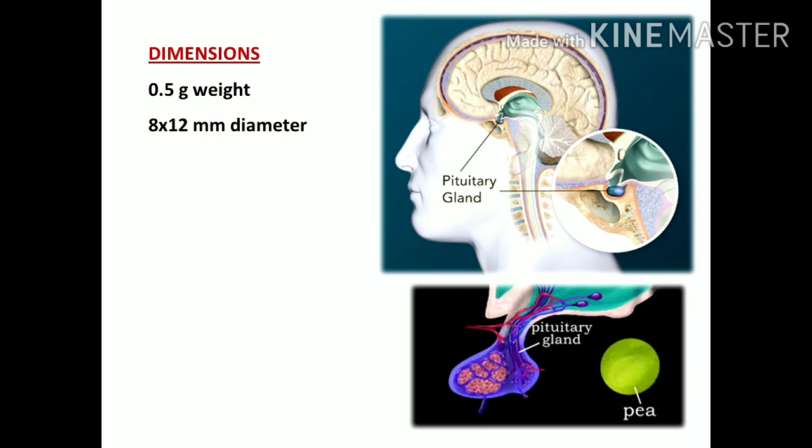Size-wise, the pituitary gland is very small — something like a tiny pea. It weighs around 0.5 grams only, and its diameter is around 8 to 12 millimeters. So that much tiny is the pituitary gland, but functionally it is very important.